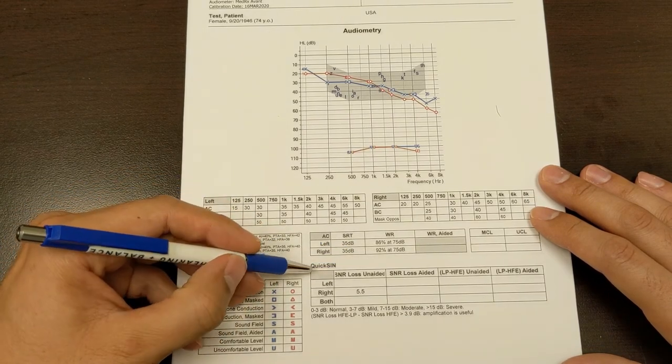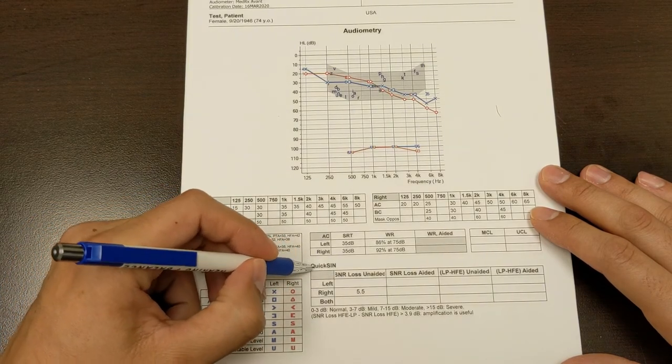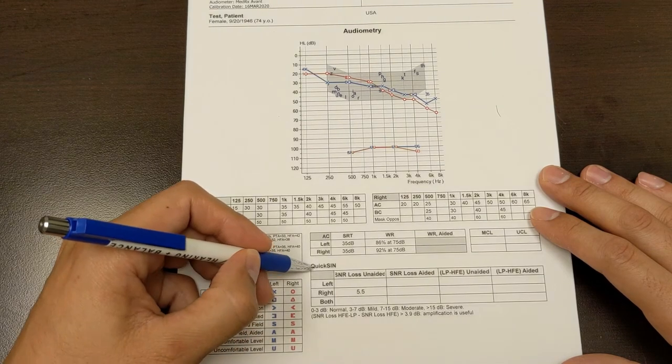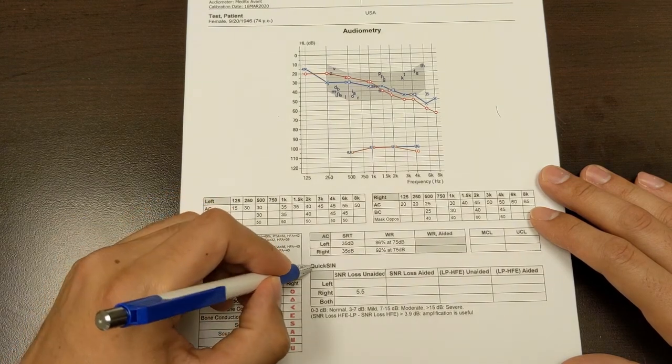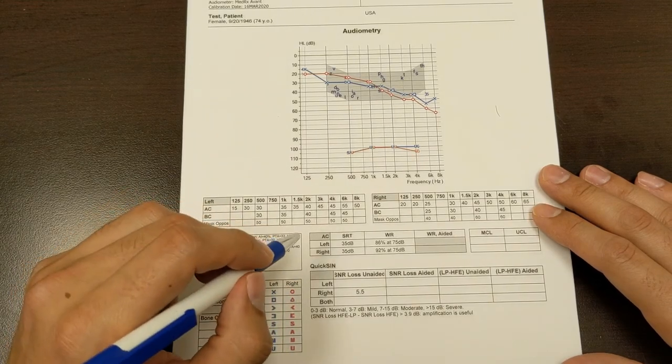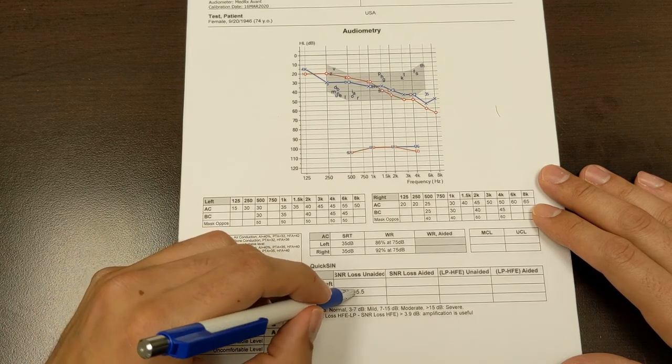Then we test this thing, quick speech and noise test. So we test to see how well you can hear in the presence of noise. And so it's a list of phrases that you repeat. And as we go, there's more and more noise. And the signal to noise ratio is recorded in the end.